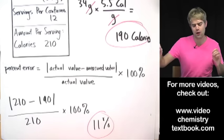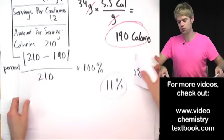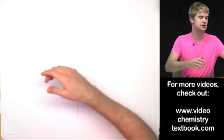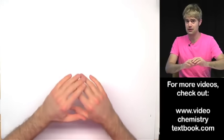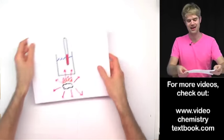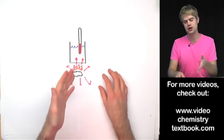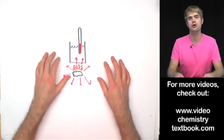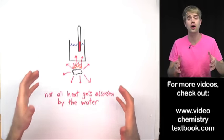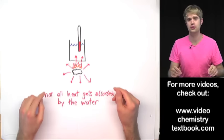Why was our number smaller than it should have been? We assumed that all the energy the burning potato chip released went into the water, so measuring the water's heat gain would equal the chip's total energy. But that's not true — the heat doesn't just go into the water; it also warms the surrounding air. Because not all the heat is absorbed by the water, our experimental value was lower than the actual calorie content of the chip.